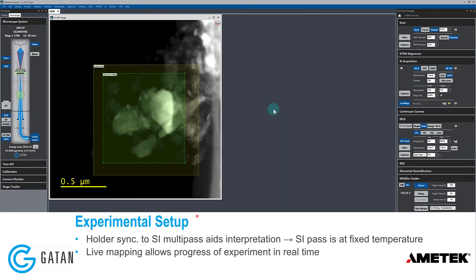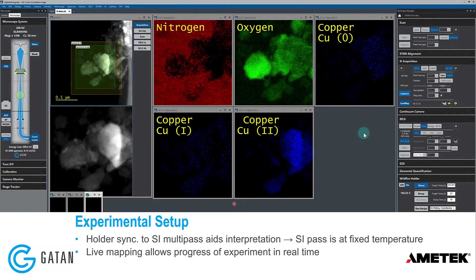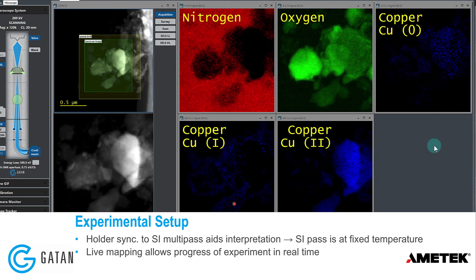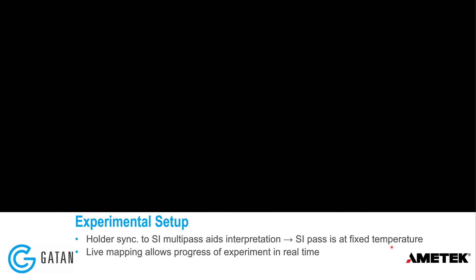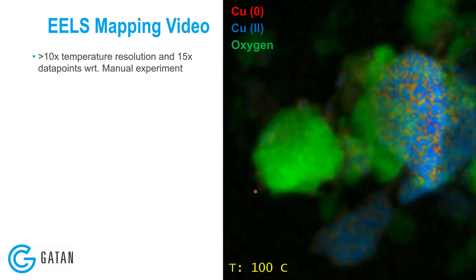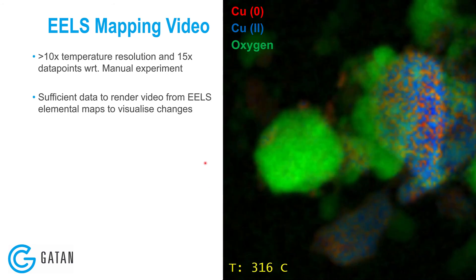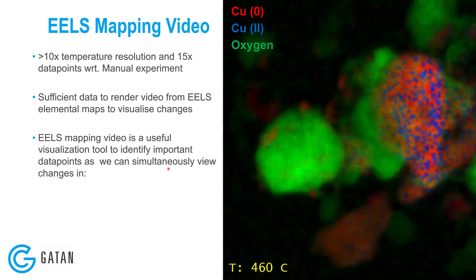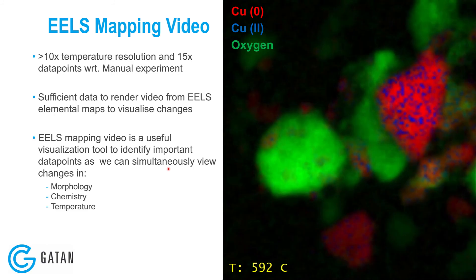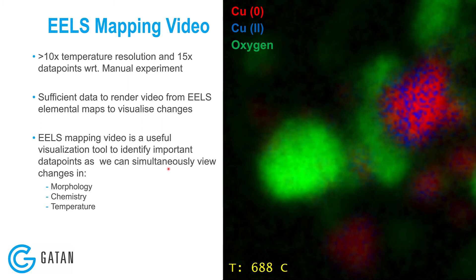In the experiment, multi-pass acquisition begins after hitting capture. Having the holder synchronized to the multi-pass method greatly aids data interpretation, as each spectrum image pass is acquired at a fixed temperature. Live mapping shows elemental maps and oxidation state maps evolving in real time, helping visualize what's happening during the experiment. This produces video output with more than 10 times the temperature resolution and 15 times the number of data points compared to the manual experiment, allowing simultaneous visualization of changes in morphology, chemistry, and temperature.